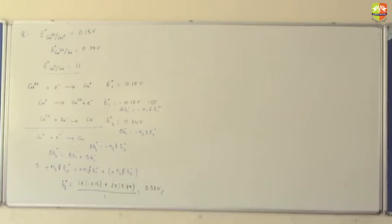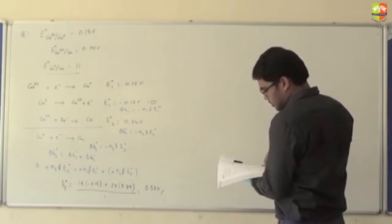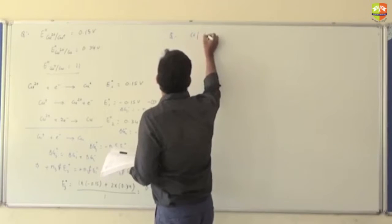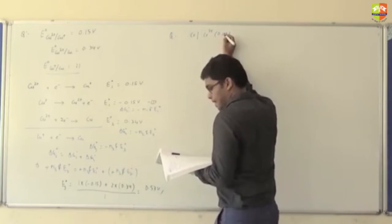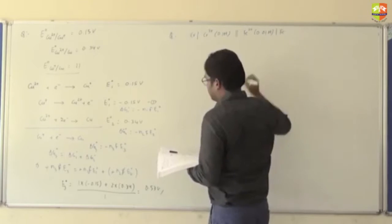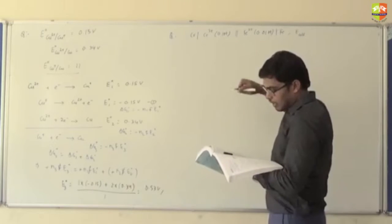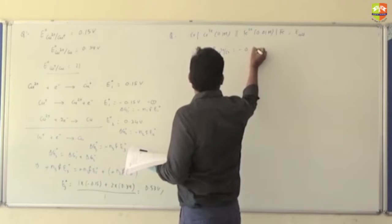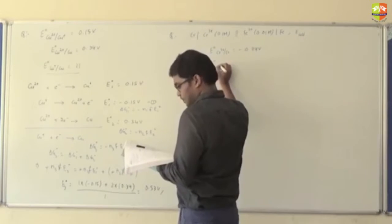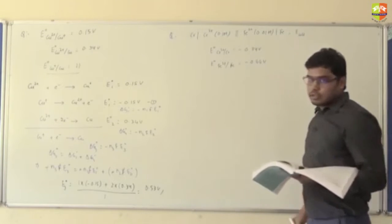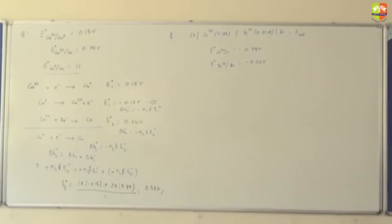Next question: calculate the potential of the cell. The cell notation given is Cr | Cr³⁺ (0.1 M) || Fe²⁺ (0.01 M) | Fe. Data given: E° for Cr³⁺/Cr is −0.74 volt, and E° for Fe²⁺/Fe is −0.44 volt. Write down the anode reaction, cathode reaction, then the complete cell reaction and apply the Nernst equation.